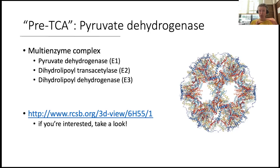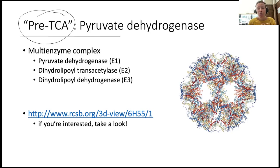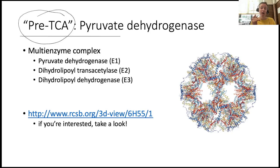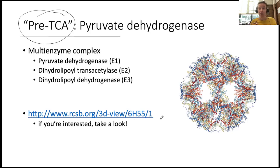Before jumping into the TCA itself, there is one step in between glycolysis and the TCA that I call the pre-TCA, performed by pyruvate dehydrogenase, or PDH. This enzyme is a complex with quaternary structure — a massive enzyme complex made of three different enzymes: E1, E2, and E3. E1 is called pyruvate dehydrogenase (the enzyme the complex is named after), E2 is dihydrolipoyl transacetylase, and E3 is dihydrolipoyl dehydrogenase. You can click the link in the slides to look at this massive enzyme complex — it's pretty cool.